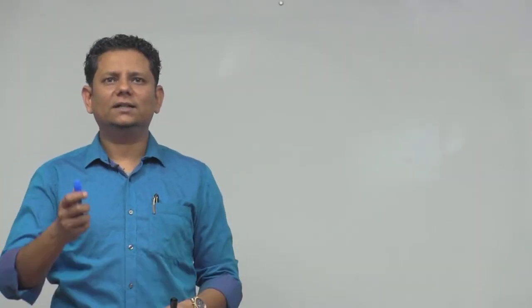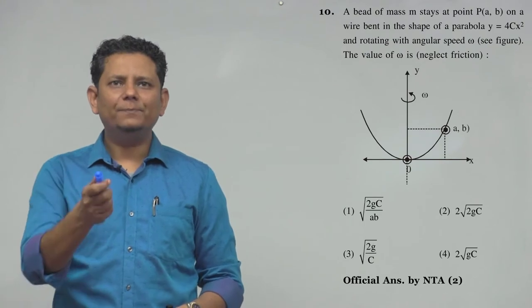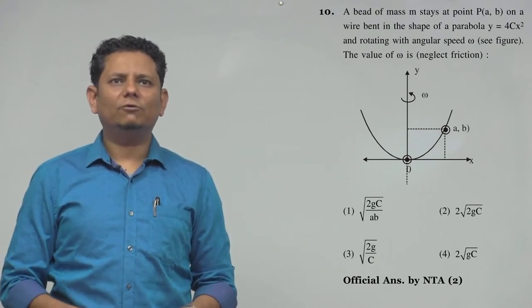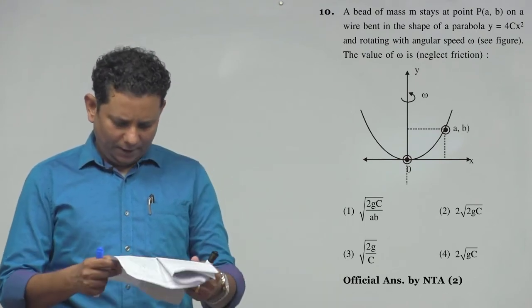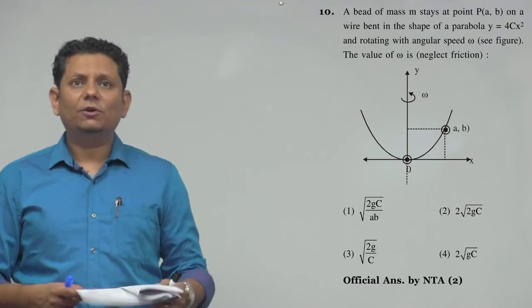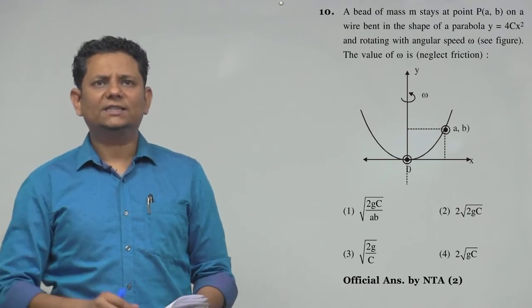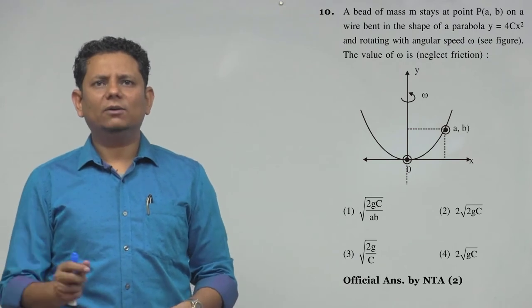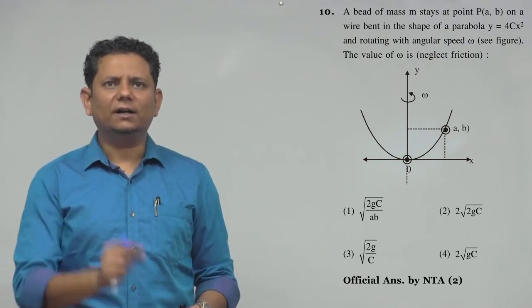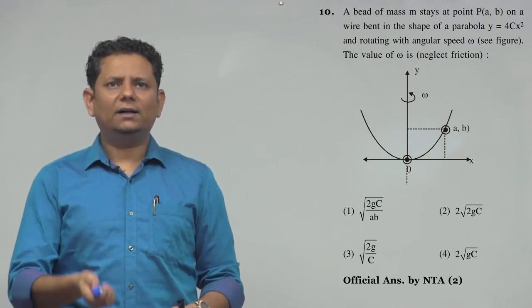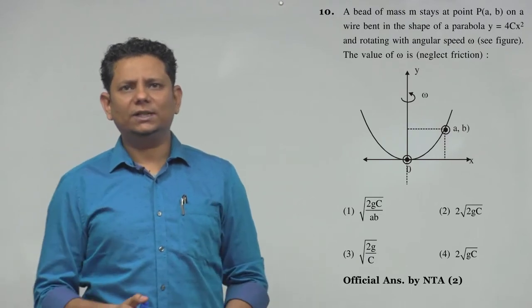The question says: a bead of mass m stays at point P(a,b) on a wire bent in the shape of a parabola y = 4cx², rotating with angular velocity ω. The question asks what is the value of ω, and four options are given.